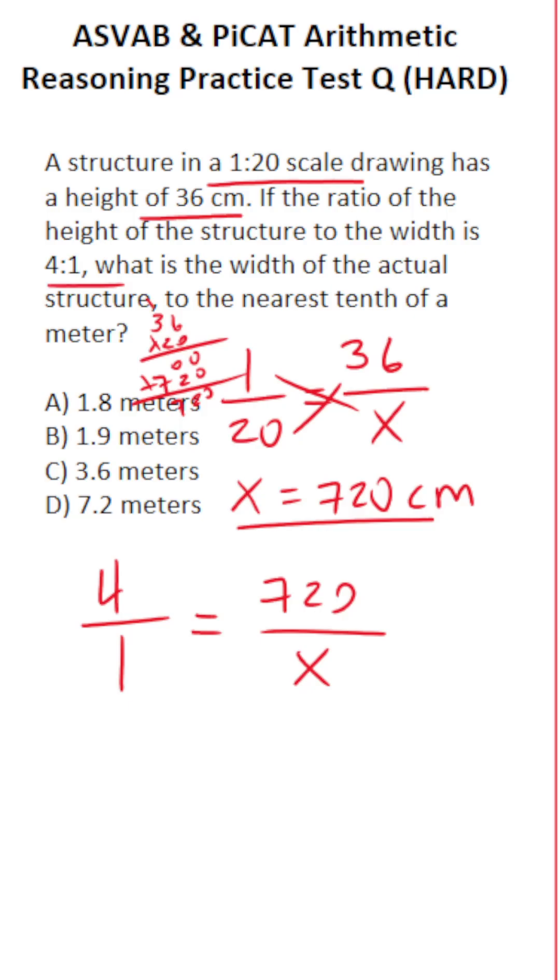You solve proportions via cross multiplication. So we have 4 times x or 4x equals 1 times 720, which is just 720. To solve for x, we're going to divide both sides by 4. This crosses out leaving you with x equals. What is 720 divided by 4? Let's think about it this way. You could do the long division as I set up off to the side here. 72 divided by 4 is 18 and just tack on that 0. So this is 180 centimeters.